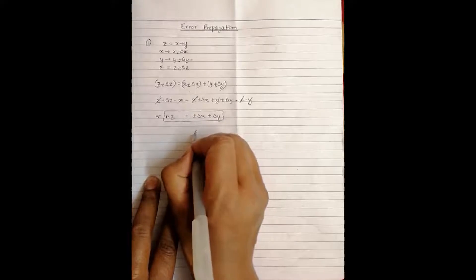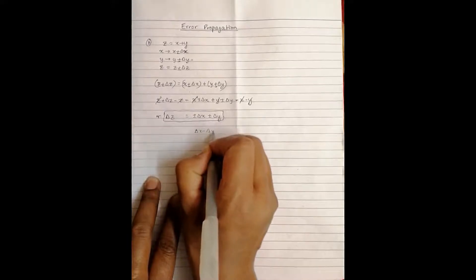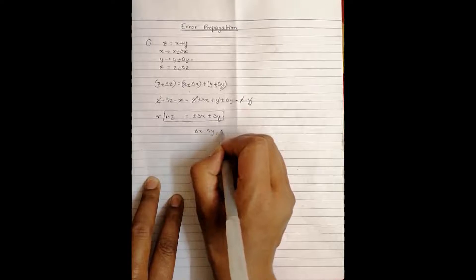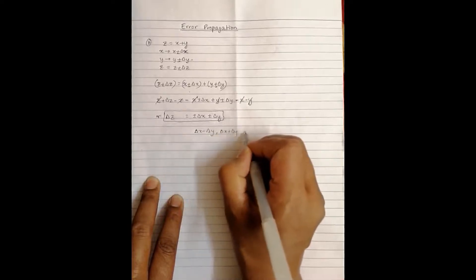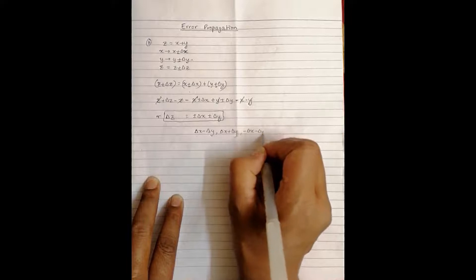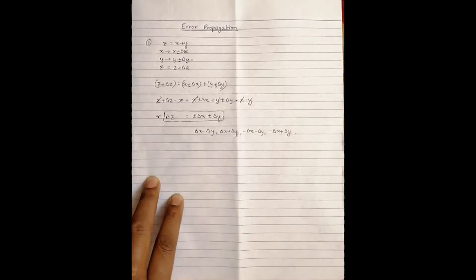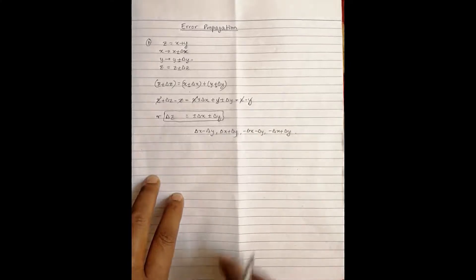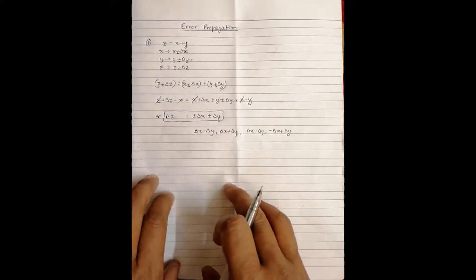So the value of delta z can be delta x minus delta y, or it could be delta x plus delta y. These are the four values that the error delta z can have.